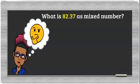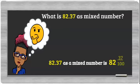What is 82.37 as a mixed number? 82.37 as a mixed number is 82 and 37 hundredths.